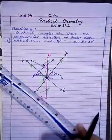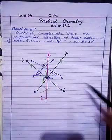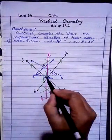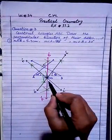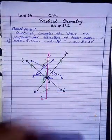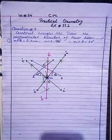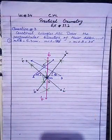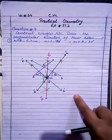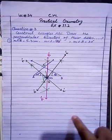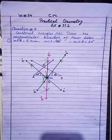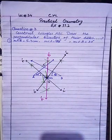All perpendicular bisectors meet at one point, named as O. O is the point of concurrency. The next part asks: do they meet inside the triangle? No, they do not meet inside the triangle. Write the steps of construction and do the practice of exercise 17.2 question number 3. Allah Hafiz.